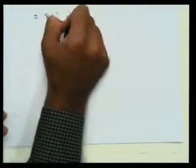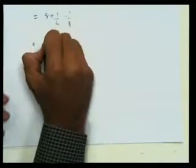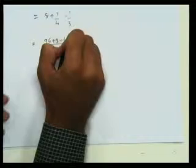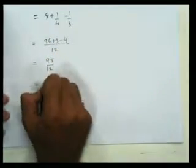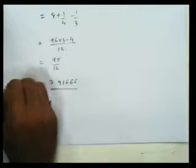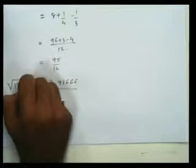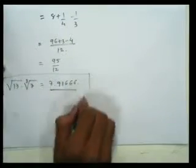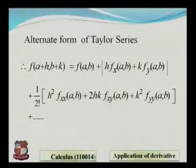So the result is 8 + 1/4 − 1/3. The LCM of 4 and 3 is 12, giving (96 + 3 − 4)/12 = 95/12 ≈ 7.917. This is the approximate value of √17 × ∛7 using the Taylor series.